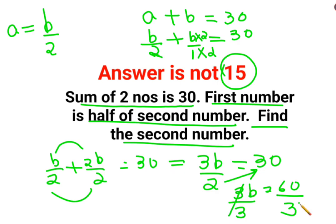So B equals 20. The second number, which was B, is equal to 20.